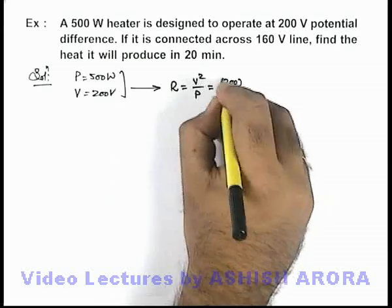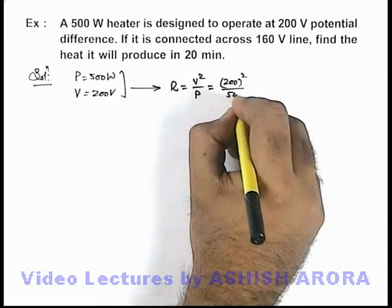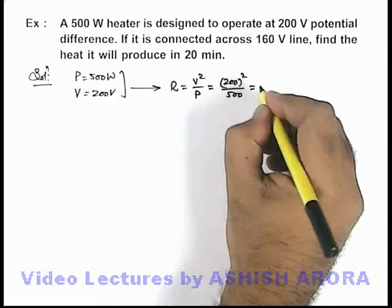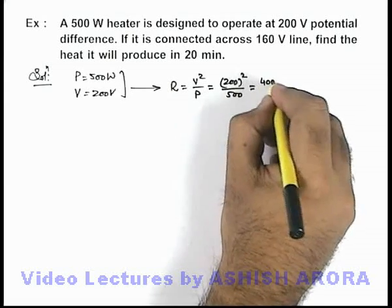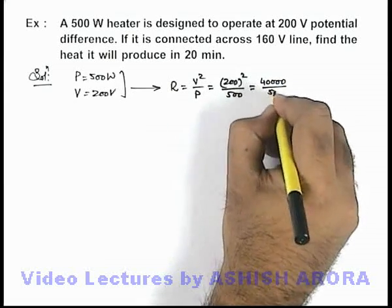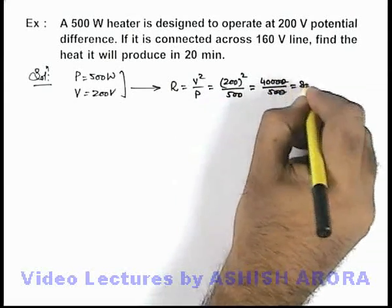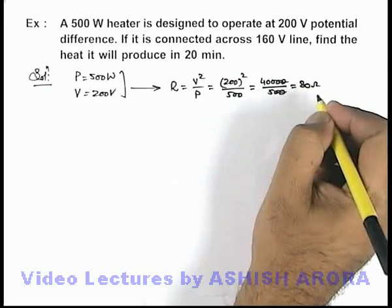So this will be 200 whole square divided by 500, so that will be equal to 40,000 divided by 500, so this will be given as 80 ohms. That is the resistance of this heater.